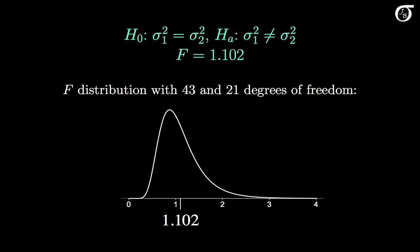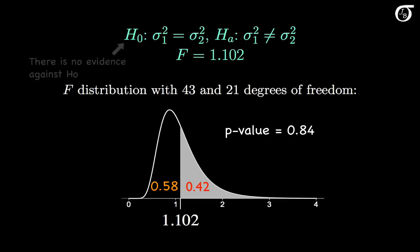For this two-sided alternative hypothesis, the p-value is double the area to the left or right of the test statistic, whichever is smaller. If we go to software, we can find that the area to the right of the test statistic is 0.42, and the area to the left is 0.58. So the p-value is double 0.42, which is 0.84. If we didn't have access to software and we had to use an F table, we couldn't find the exact p-value, but we could tell that the p-value is large. 0.84 is a very large p-value, giving absolutely no evidence against the null hypothesis. But what does that mean in the context of this problem?